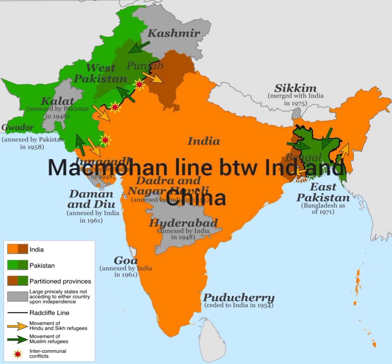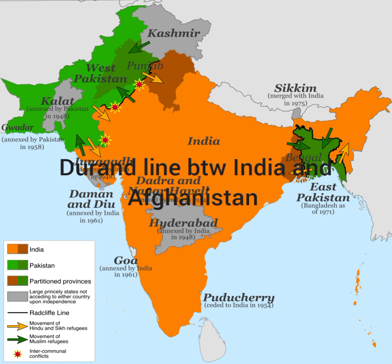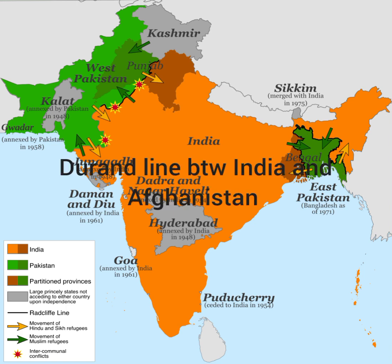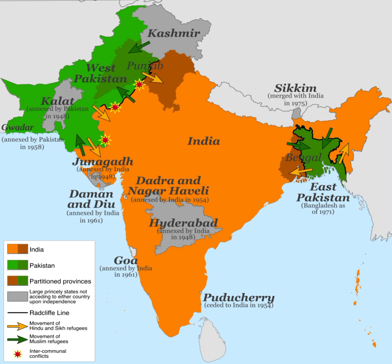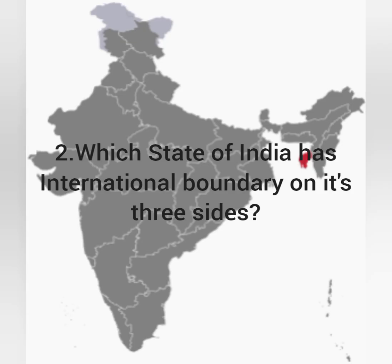The McMahon Line is the border between India and China, and the Durand Line is the border between India and Afghanistan. Sri Lanka is separated from India by the Palk Strait.